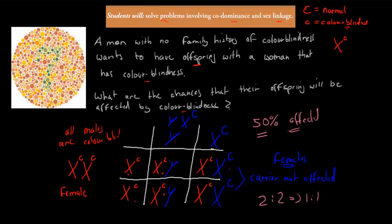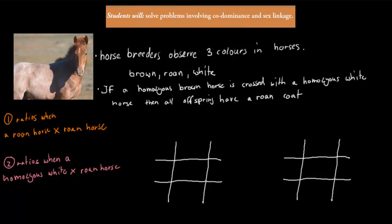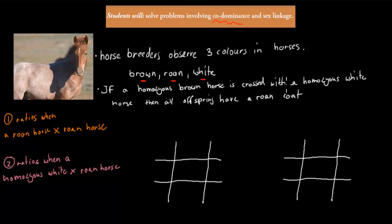That would be that kind of question. The next one is a co-dominance question. Horse breeders observe three colours in horses: brown, roan — which is a mix between brown and white — and white. If a homozygous brown horse is crossed with a homozygous white horse, all offspring have a roan coat. So crossing a horse with two brown alleles with a horse with two white alleles gives a roan horse.